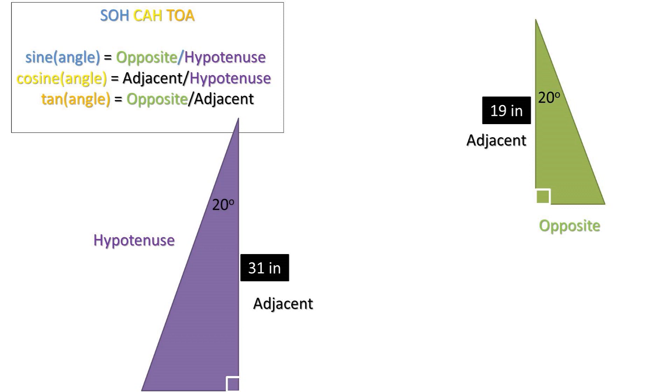We need to find the hypotenuse of the purple triangle and we are given the adjacent side length. So which part of SOH CAH TOA should we use? The CAH portion rearranged to get what we are solving for, hypotenuse, to one side. So the adjacent side length of 31 inches divided by the cosine of 20 degrees equals the hypotenuse or sawhorse leg length.